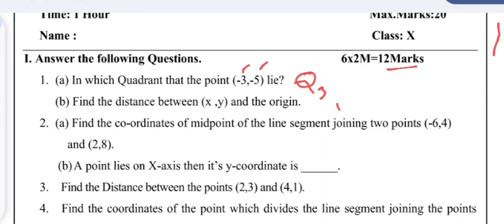The distance between a point (x, y) and the origin is √(x² + y²). Question 3: Find the coordinates of the midpoint of the line segment joining the two points (−6, 4) and (2, 8).